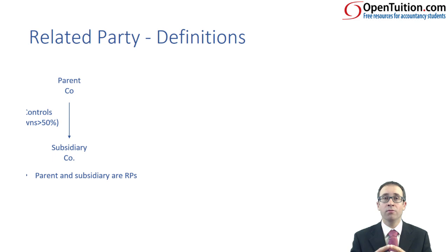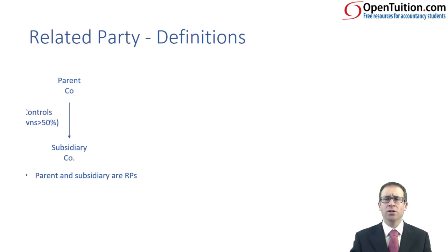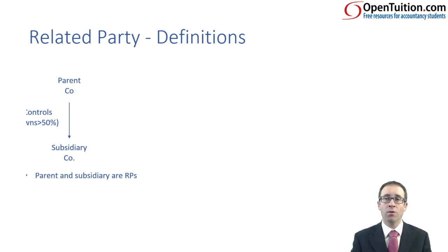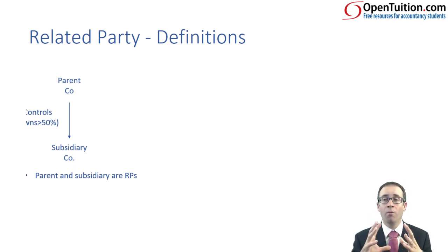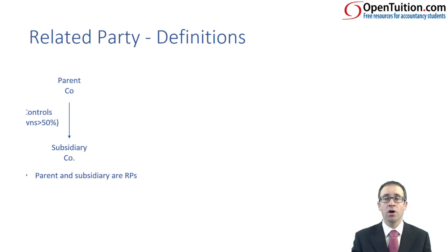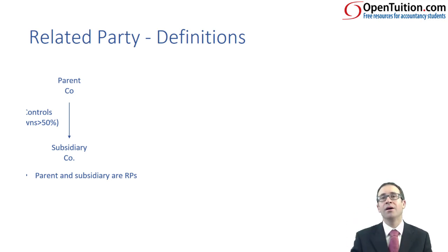You will also need to disclose, if there was a charge applied, any outstanding balances due between the parties, and also any amounts that have been written off during the year. There isn't a huge amount of disclosure required, but providing you first spot that there is a related party you can then discuss what is required. If there is no transaction, what would need to be disclosed regardless is that within the subsidiary's books they would need to disclose who the parent company is and that it is controlled by that parent.